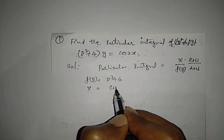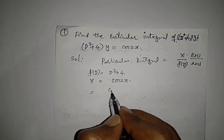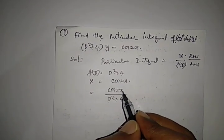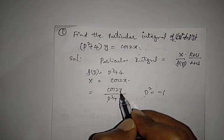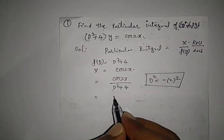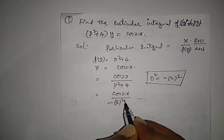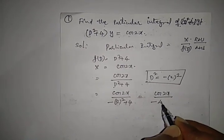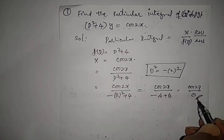Substituting into the formula, the particular integral equals cos 2x divided by (D² + 4). Since we have cos 2x in the numerator, we substitute D² = −(2)² = −4. So the denominator becomes −4 + 4 = 0, giving cos 2x divided by 0.